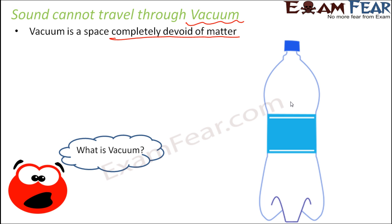There are techniques by which you can take out even the air from the bottle. Then the bottle is completely devoid of matter — it doesn't contain any liquid, any gas, nothing. And then we say that a vacuum has been created inside the bottle. So vacuum means absolutely nothing, no matter at all.